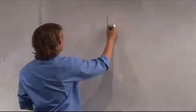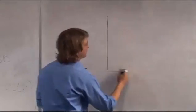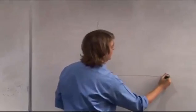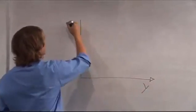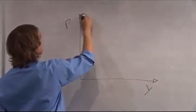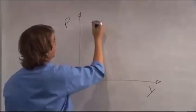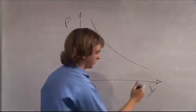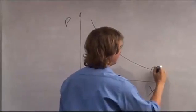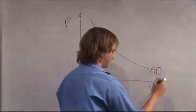First, we're going to have a look at aggregate demand in terms of price and output. There's output, there's price, and it's going to be downward sloping. This is our aggregate demand curve.